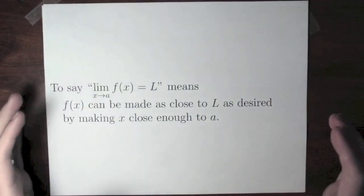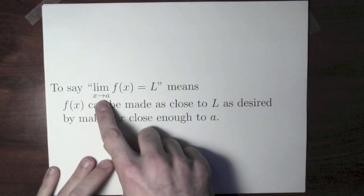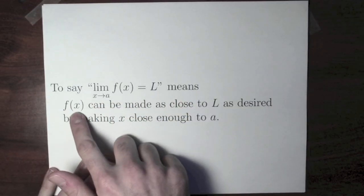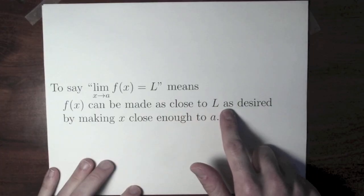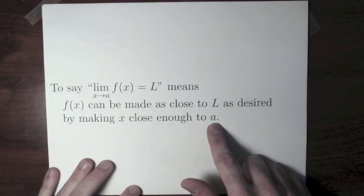Limits are probably the most important concept in this course, so we should really have a definition of what we mean by limit. Here is what we mean by limits: to say that the limit of f of x as x approaches a is equal to l means that f of x can be made as close to l as desired by making x close enough to a. There's a ton of subtlety to this definition, so it's worth looking at an example.